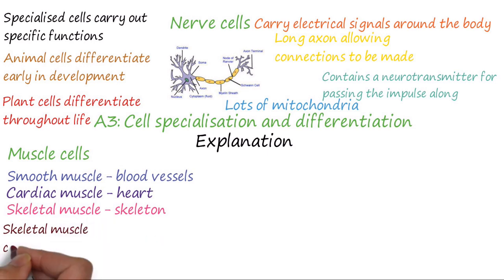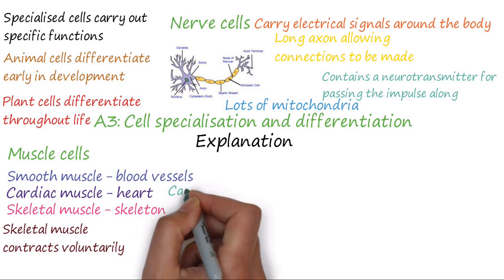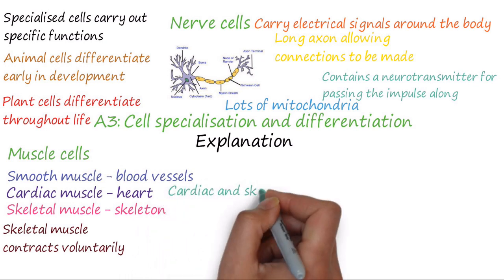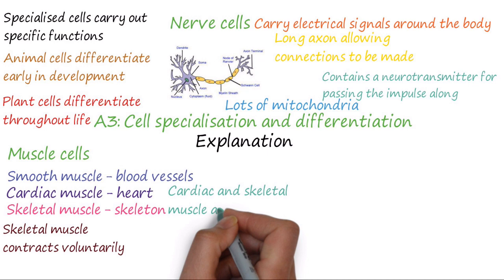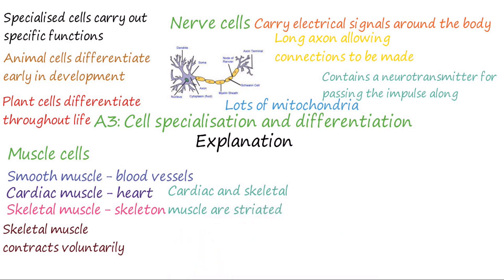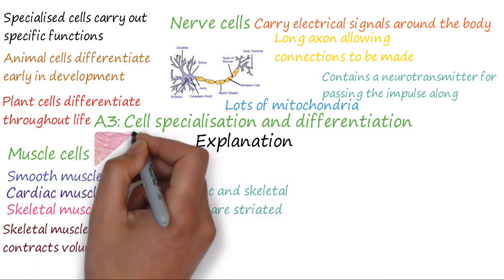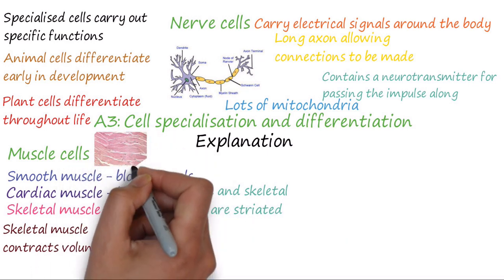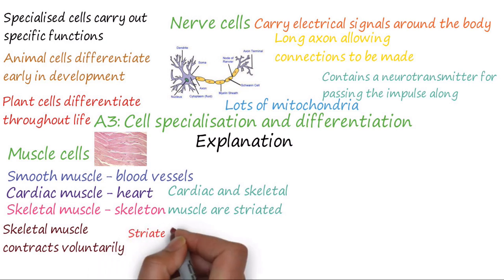Skeletal muscle is the only type of muscle cell which contracts voluntarily, meaning we control the contraction and relaxation of these muscles, and its movements are not automatic. Cardiac and skeletal muscle are said to be striated, as they appear striped under a microscope.